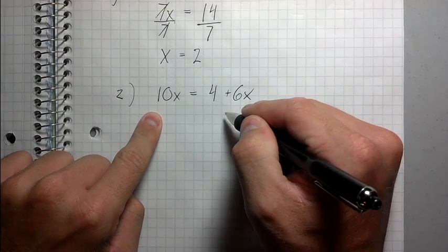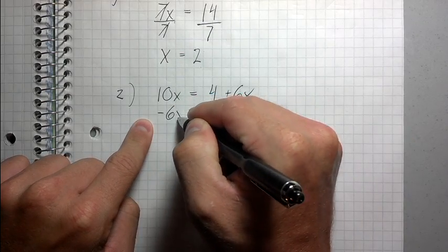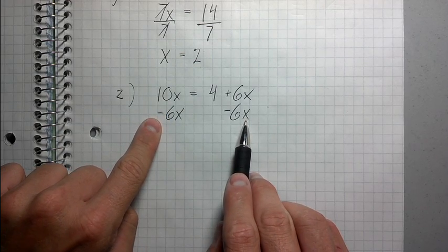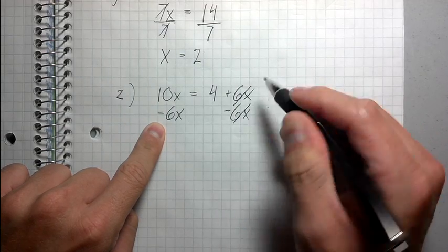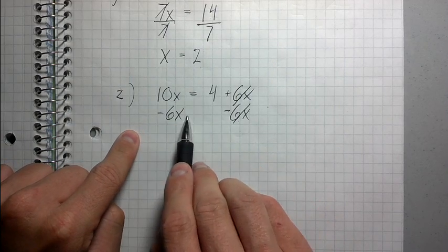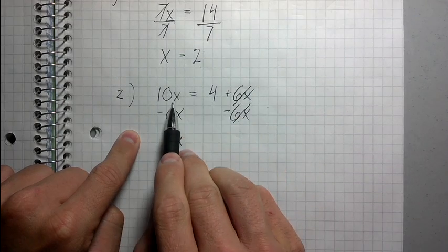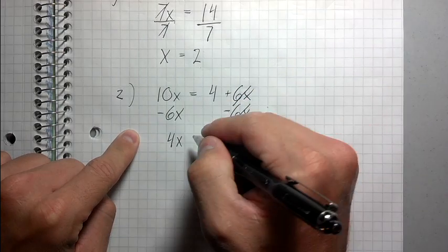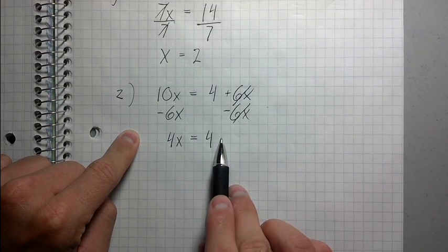I'm going to take this 6x and subtract 6x from both sides. I subtracted 6x because I knew it would cancel out this positive 6x. Now I have 10x minus 6x equals positive 4x, because 10 minus 6 is 4. You just subtract the numbers in front, don't touch the x. So I have 4x equals 4.